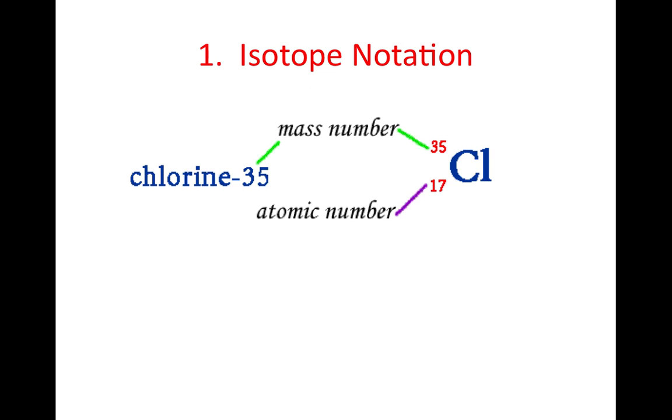For isotope notation, there's a couple different ways we write down isotopes. One way is by writing the name of the element, chlorine, or you can use its abbreviation, and then you write a dash, and you write the mass number right there. Or, you can write it this way, seen on the right side of the page. You can write Cl, you write the mass number on top as a superscript, and then the atomic number below it as a subscript. Even though that's not in red, make sure to get both of these two methods down into your notes because they're going to be helpful for you to look at.